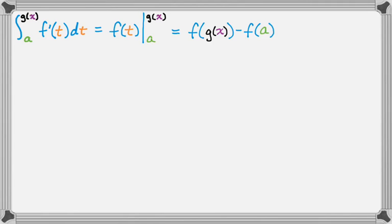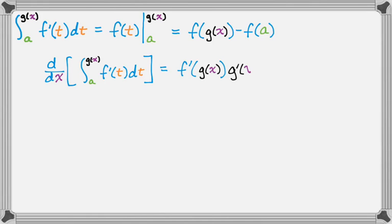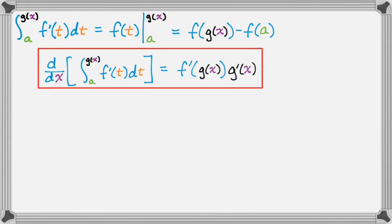f(a) is still a constant, but now when I take the derivative of this thing, I'm going to have to use the chain rule. So the derivative with respect to x, a to g(x), f'(t)dt, is going to be f'(g(x)) times g'(x) by the chain rule.